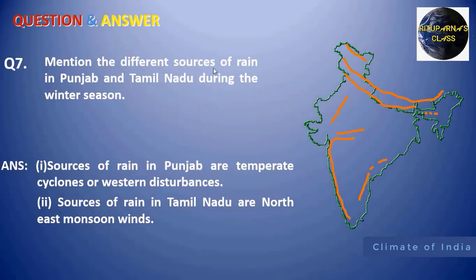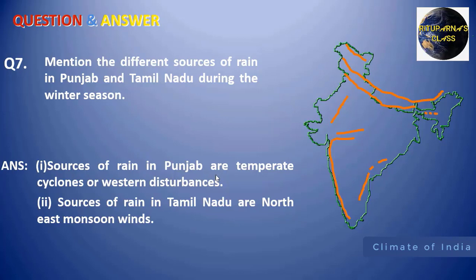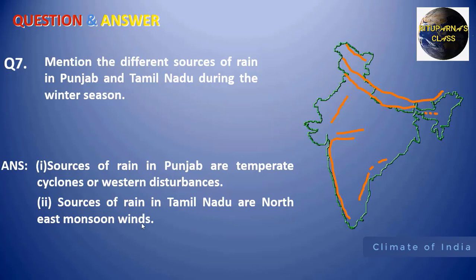Next: mention the different sources of rain in Punjab and Tamil Nadu during the winter season. The sources of rain in Punjab are the temperate cyclones, also known as western disturbances, which come from the Mediterranean region. The sources of rain in Tamil Nadu are the northeast monsoon winds — winds coming from the north that carry moisture from the Bay of Bengal.